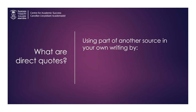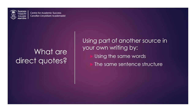Often, in academic writing, you'll need to draw on other sources for support or evidence. One way to incorporate other sources into your writing can be by using direct quotes. When you use a direct quote, this involves using a segment of the original text verbatim. This means that you use the exact same words, sentence structure, and punctuation found in the original text.